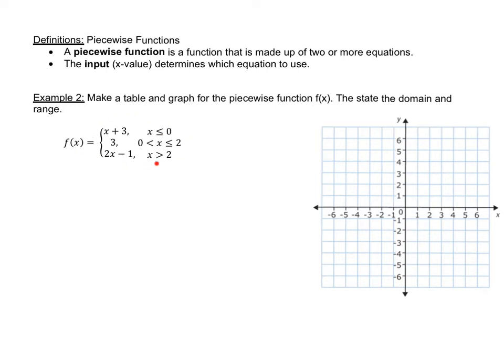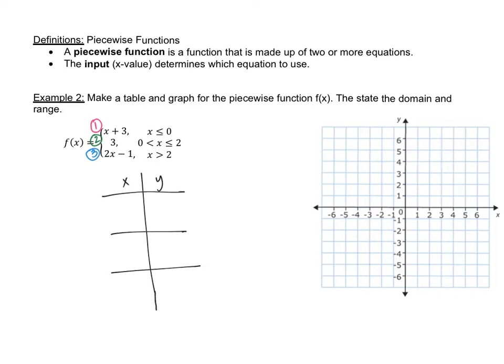Here you can see we have a piecewise function and it has three equations. I'm going to label them with different colors to help you recognize which equation I'm referring to when I'm drawing them on the graph. It says to make a table and then graph — it's really helpful to make a table, though you don't have to. Typically you have your x and your y values, and because we have three equations, I'm going to section this out into three rows.